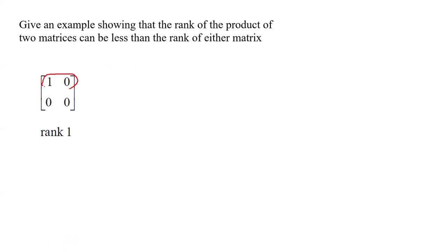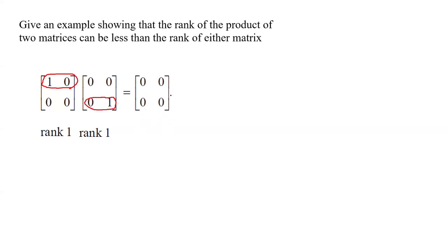The second matrix is [0, 0; 0, 1], which also has rank 1 because it has only one non-zero row. If you multiply them together, you get the zero matrix with rank 0, since it has no non-zero rows. So you have shown that two matrices each with rank greater than the rank of their product.